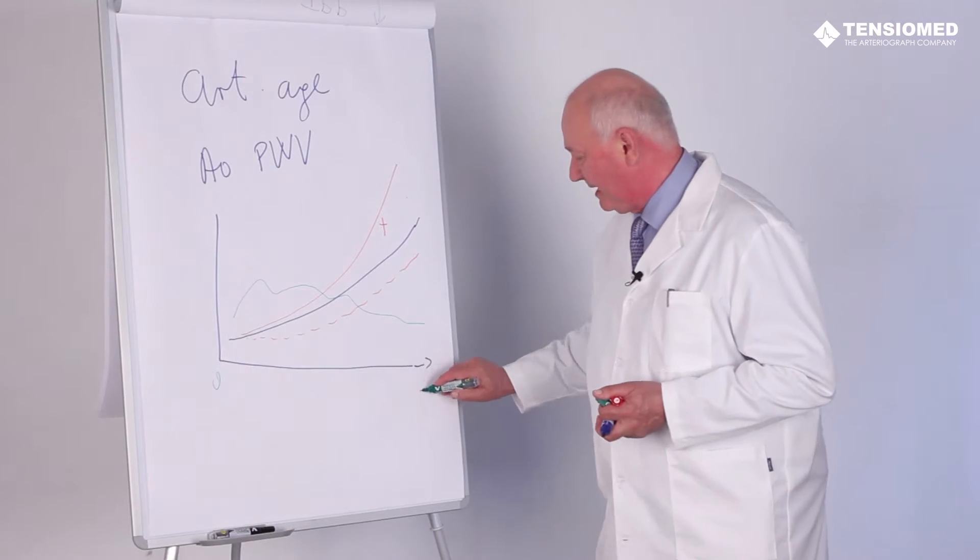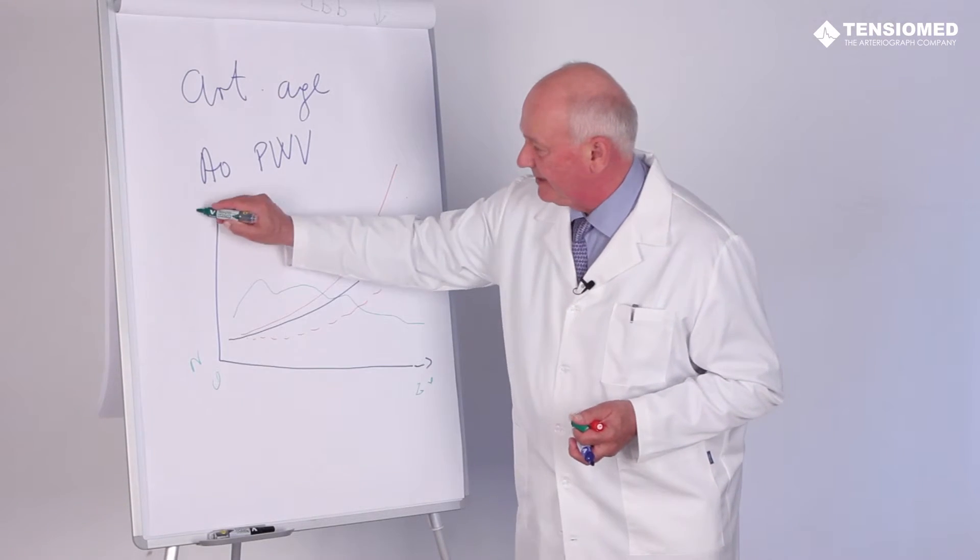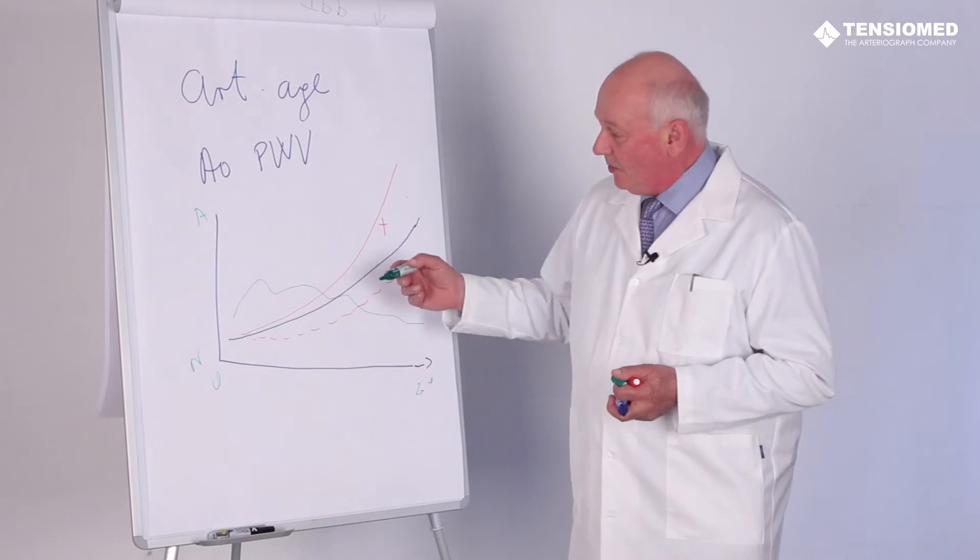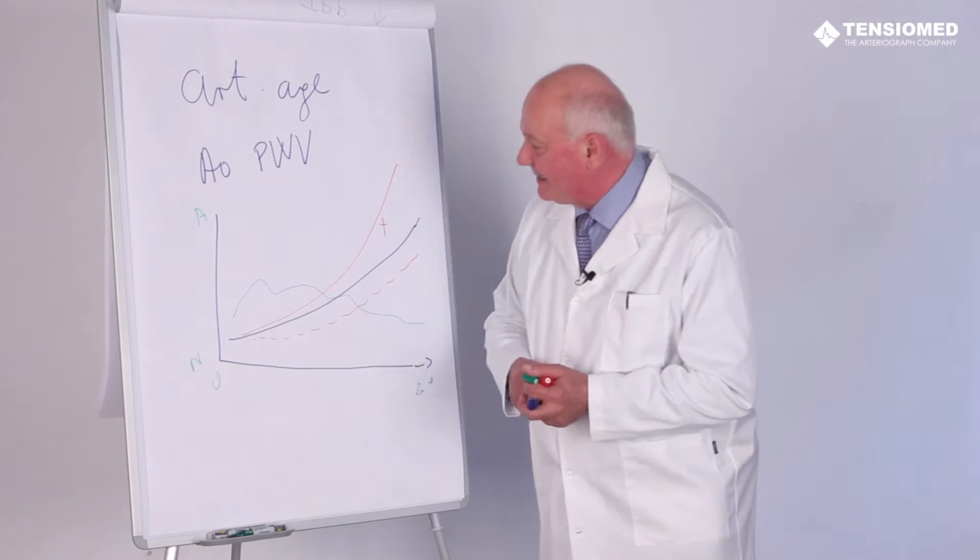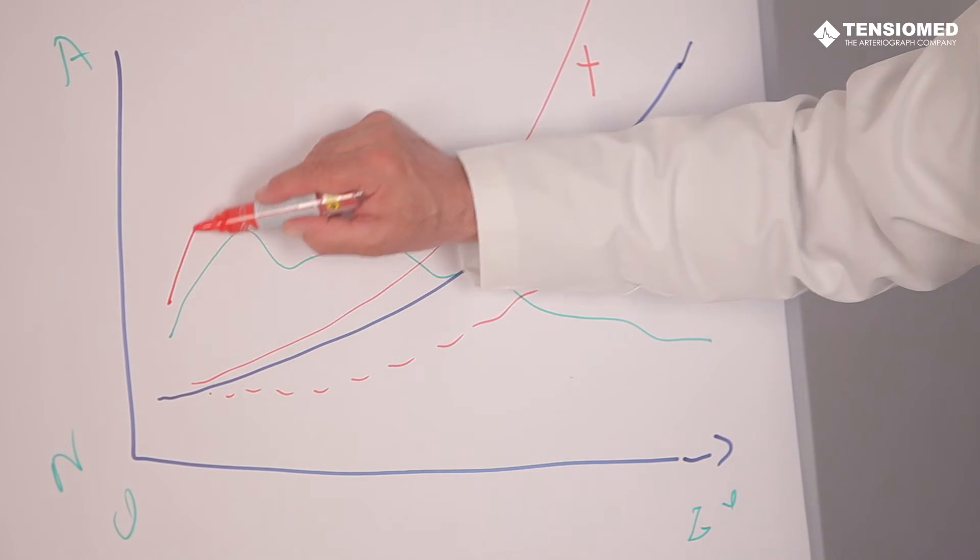This is zero years, this is 80 years. This is normal, this is very abnormal parameters. Also, serum glucose can change in our life significantly.